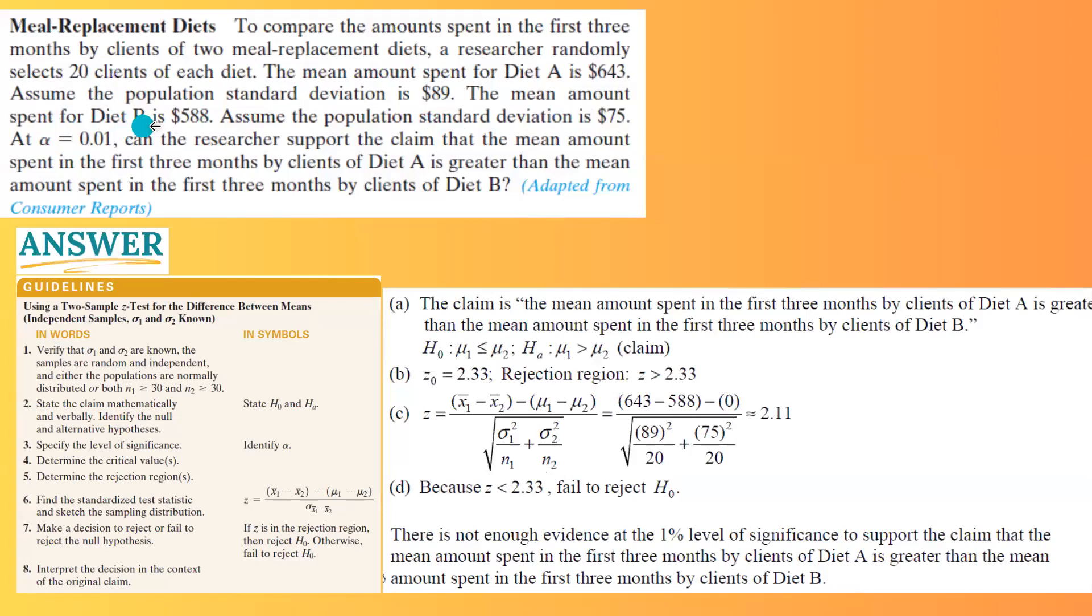The mean amount spent for the second diet, diet B, is $588, and assume the population standard deviation is $75. At 1% level of significance, can the researcher support the claim that the mean amount spent in the first three months by clients of diet A is greater than the mean amount spent in the first three months by clients of diet B?